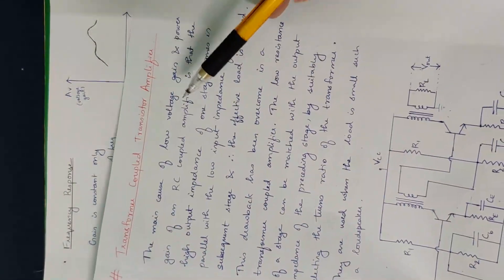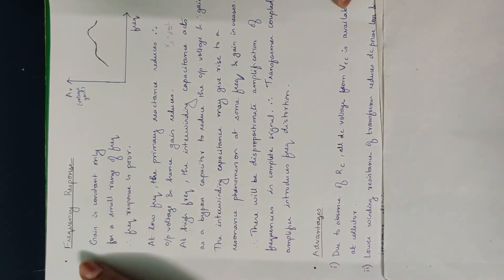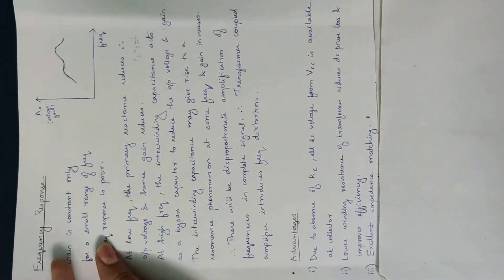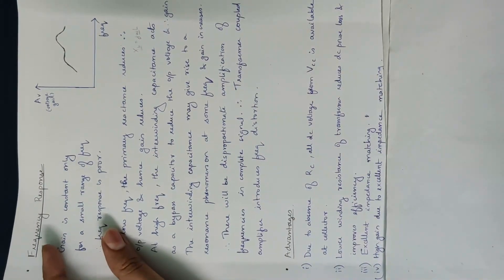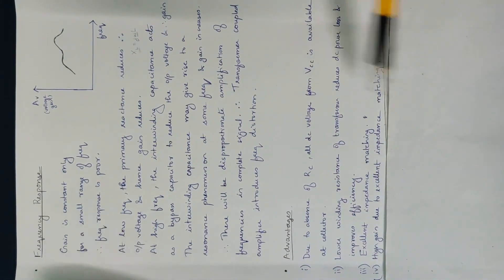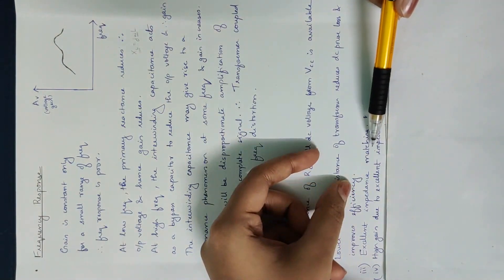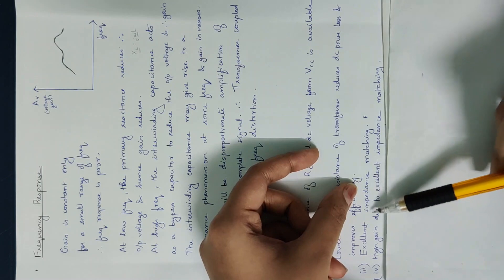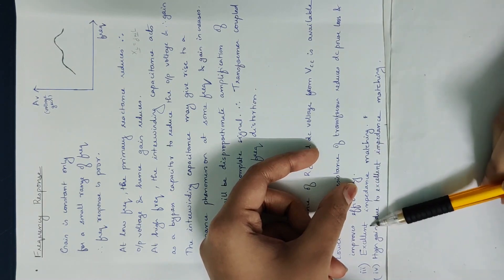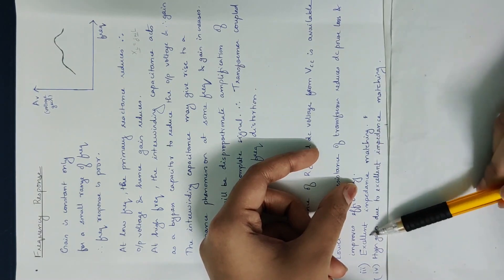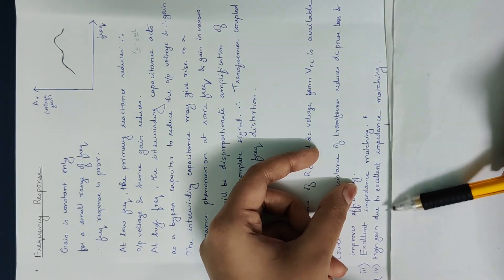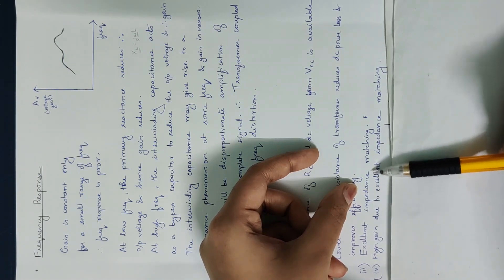Advantages: The RC-coupled amplifier has a disadvantage of low voltage gain and power gain. The transformer-coupled amplifier provides excellent impedance matching, which overcomes this disadvantage and increases gain.